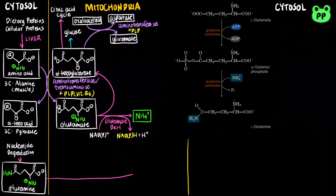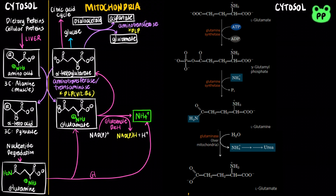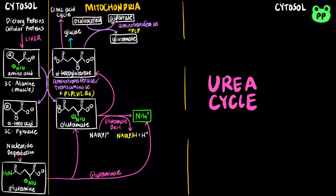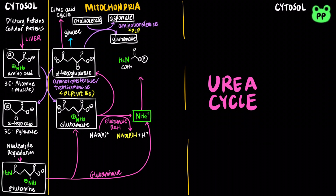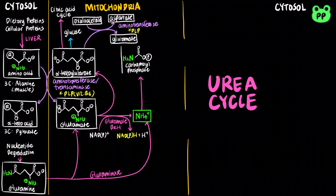In the liver mitochondria, the enzyme glutaminase converts glutamine to glutamate and ammonium ion. The pool of free ammonium ion from glutamate dehydrogenase and glutaminase then combines with bicarbonate produced by mitochondrial respiration to form carbamoyl phosphate in the mitochondrial matrix. This reaction is catalyzed by carbamoyl phosphate synthetase 1, abbreviated as CPS1, and is coupled to the hydrolysis of two ATP molecules.